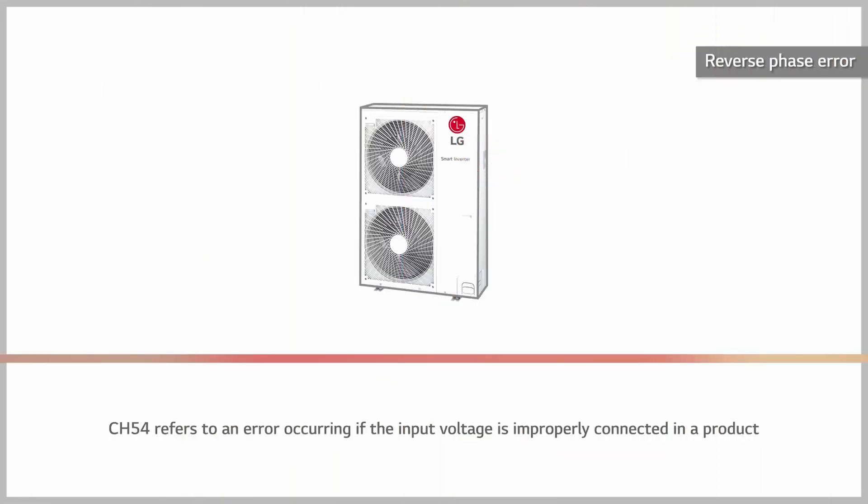Channel 54 refers to an error occurring if the input voltage is improperly connected in a product using three-phase power, or if the power connection sequence is wrong.